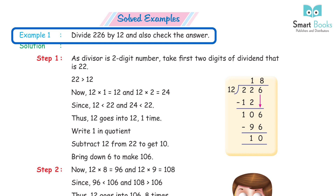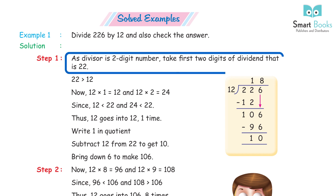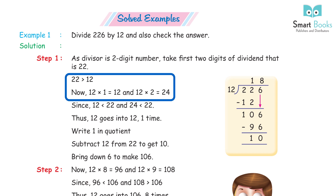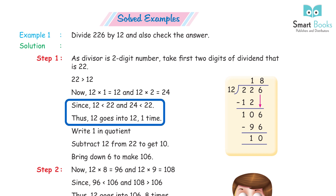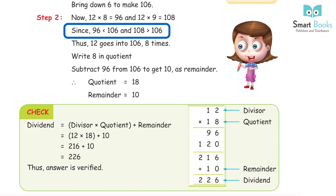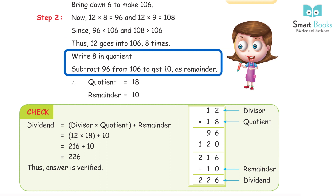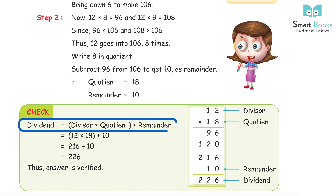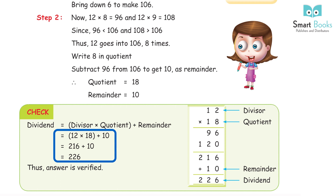Example 1: divide 226 by 12 and check the answer. Step 1: the divisor is two digits, take first two digits of dividend — 22. Since 22 > 12, and 12×2 = 24 > 22, 12 goes into 22 one time. Write 1 in quotient, subtract 12 from 22 to get 10, bring down 6 to make 106. Step 2: 12×8 = 96 and 12×9 = 108; since 96 < 106 < 108, 12 goes into 106 eight times. Write 8 in quotient, subtract 96 from 106 to get remainder 10. Quotient 18, remainder 10. Check: 12×18 + 10 = 216 + 10 = 226. Answer verified.